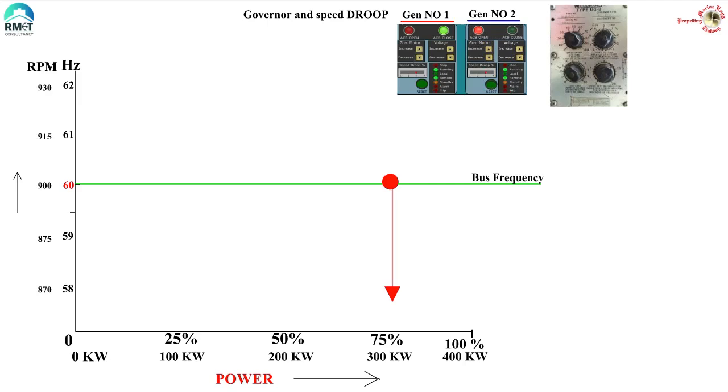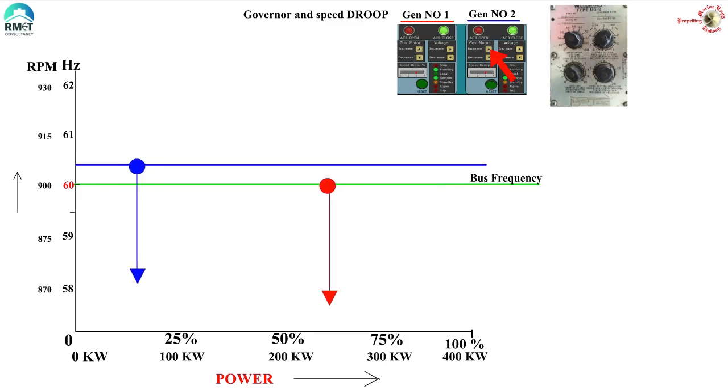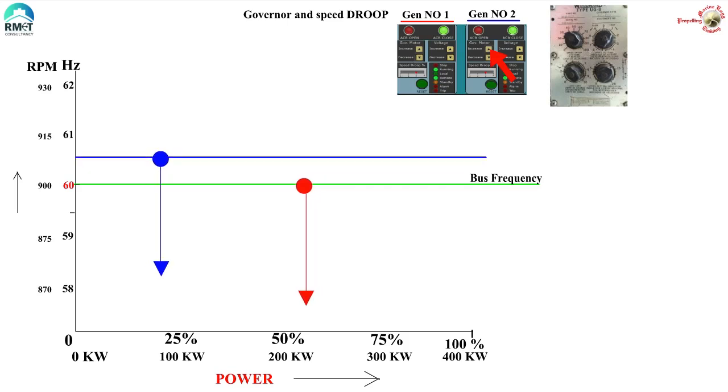Now suppose we start number two generator and want to parallel it with number one generator. Let us increase the frequency of incoming generator to say 60 hertz. Now we have closed the breaker. Let's start increasing load on number two generator. To increase the load on number two generator, I need to press this button, which is actually the speed setting button. Seems easy, but actually there's a hidden problem. When we increase the load on number two generator, we are actually also increasing the RPM. Obviously, number one generator loses load.